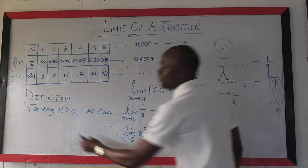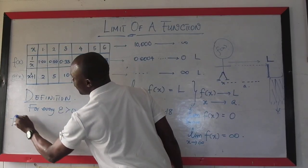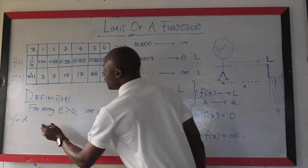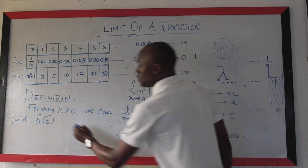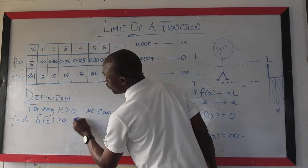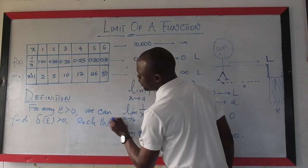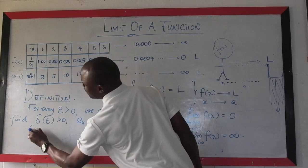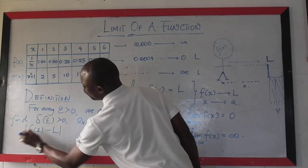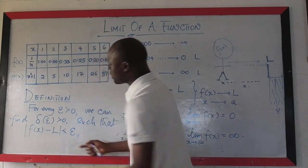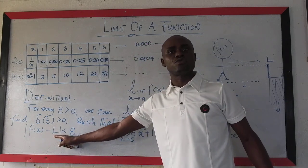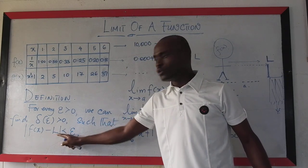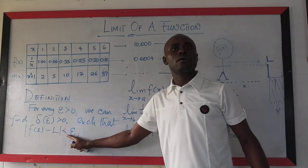epsilon greater than 0, we can find, we can find delta, which depends on epsilon, which is also better than 0, such that, such that, f of x minus L will be less than epsilon. That simply means that f of x gets arbitrarily close to L, using this as our difference,